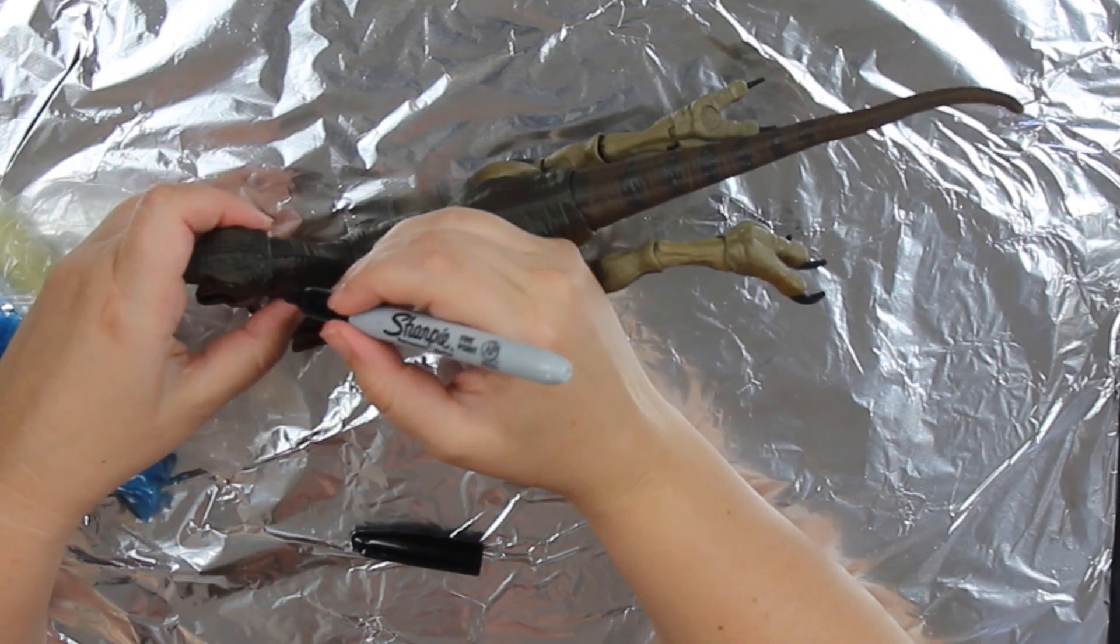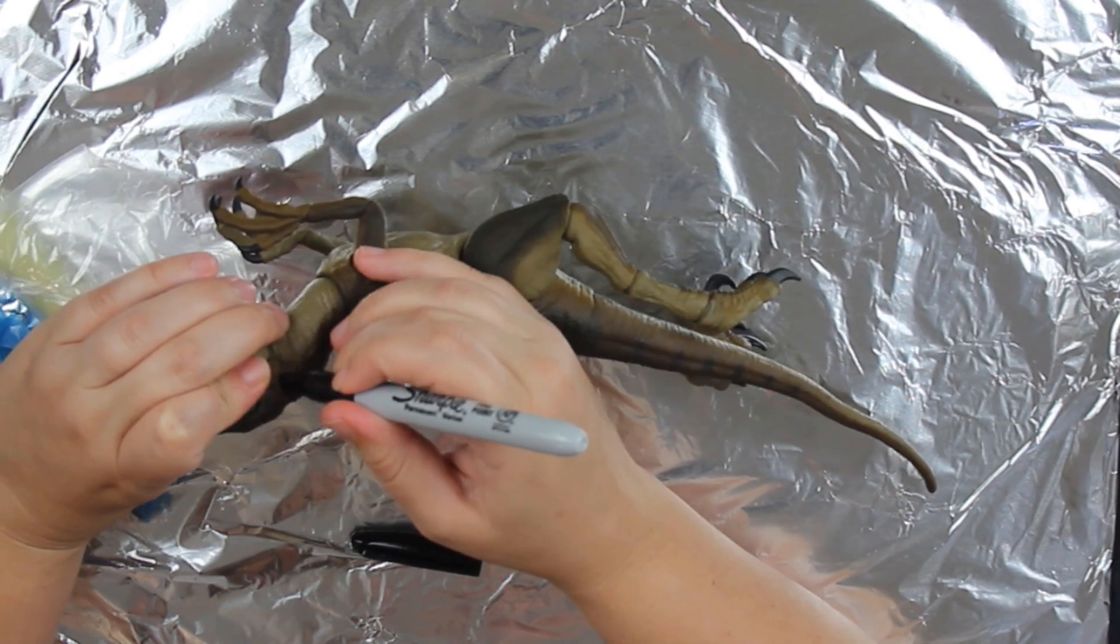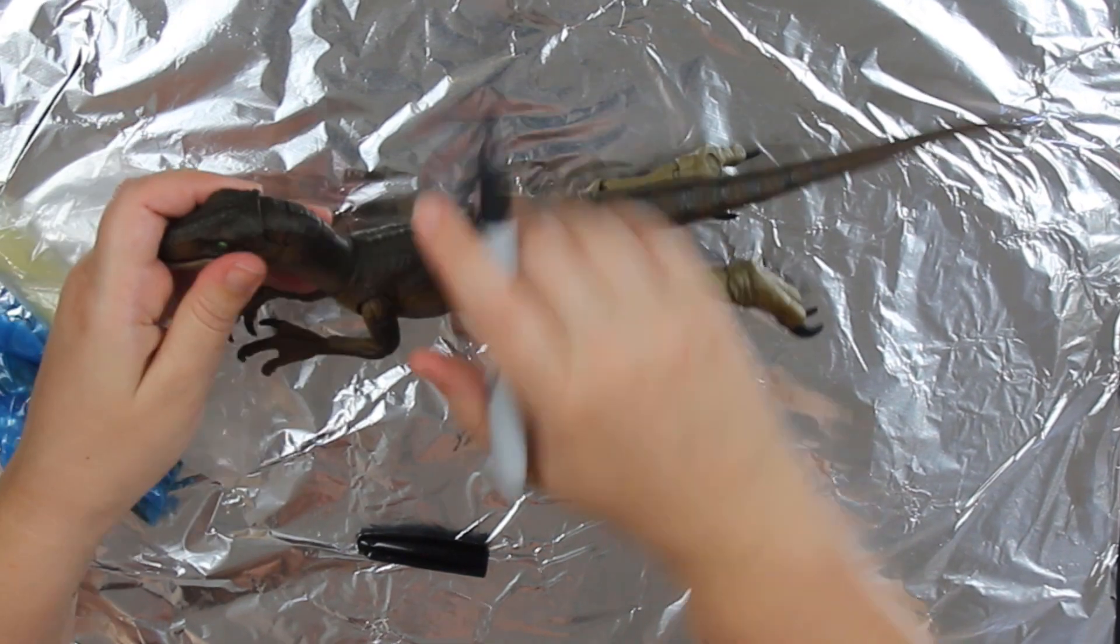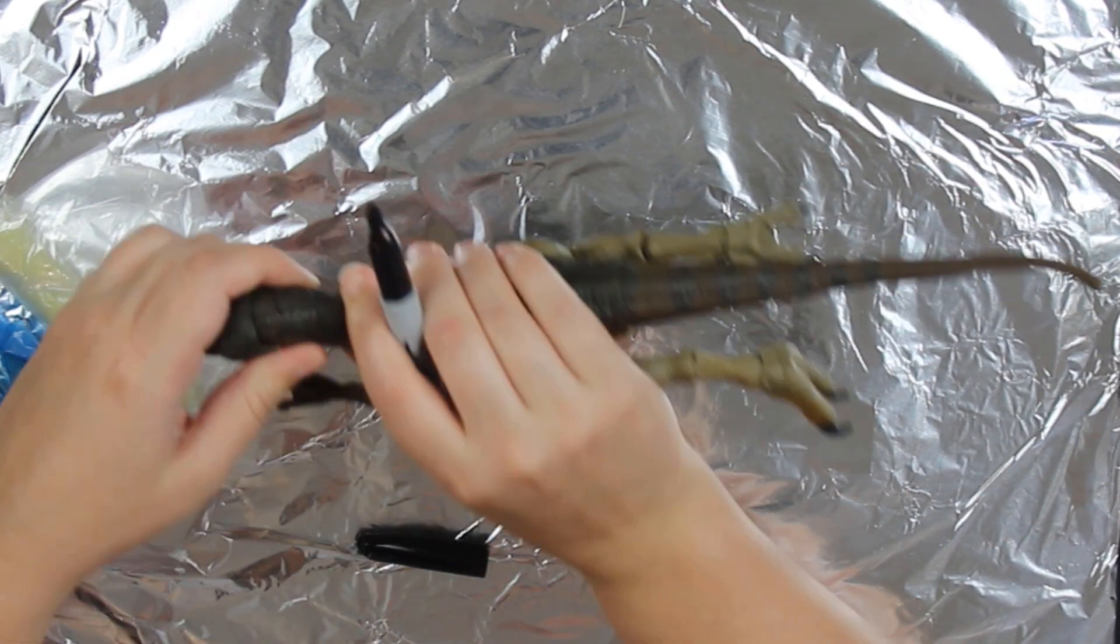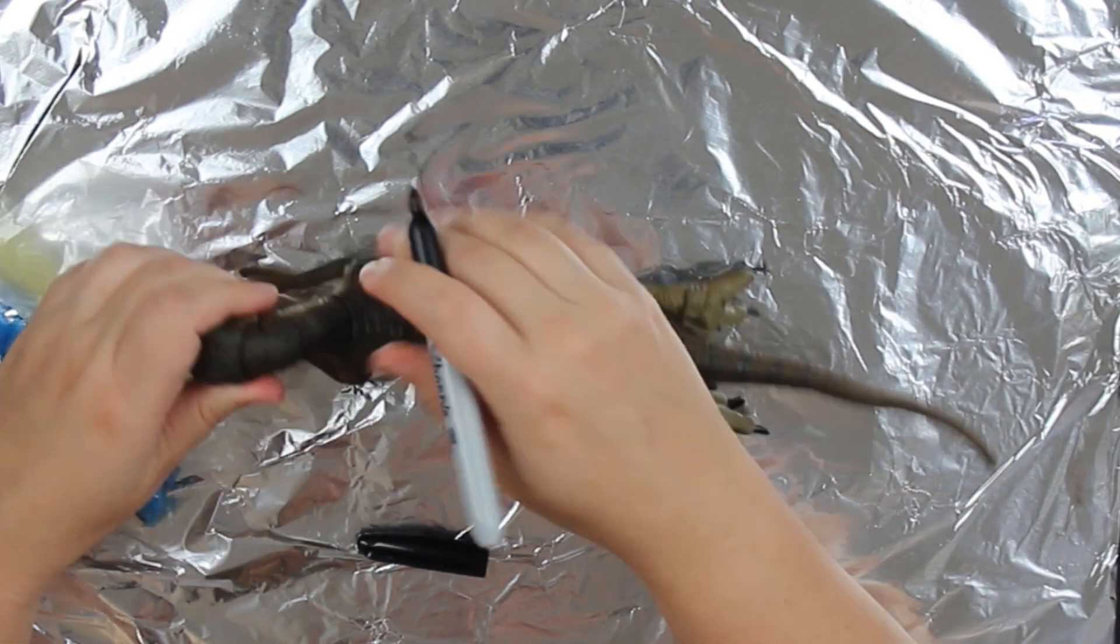So first off, I'm moving all the joints into their full extension and marking with a sharpie where they stop. This way I don't sculpt on areas where the parts move and seize up the joints.